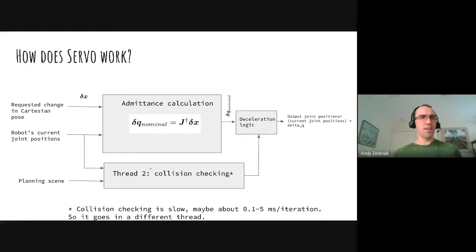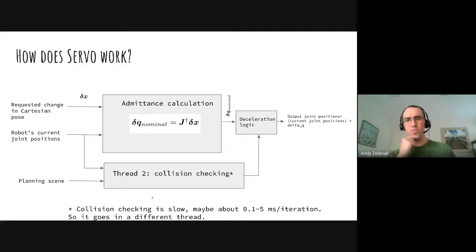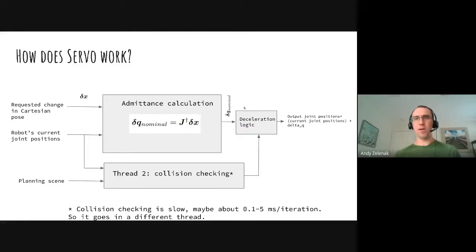Here's a block diagram of how Servo works. You feed in your requested change in Cartesian pose, you get that Jacobian from MoveIt and you invert it, then you multiply to get the change in joint values. It's a little bit tricky because we also need to run collision checking, and that's pretty slow - it takes about 0.1 to 5 milliseconds per iteration. That's not fast enough, so we put that in a separate thread and combine it with some logic from the output that decelerates based on how close you are to a collision.